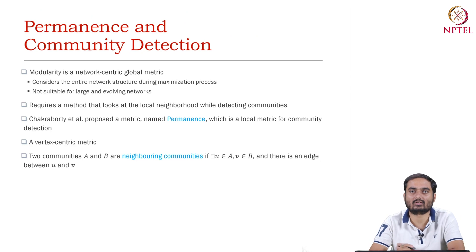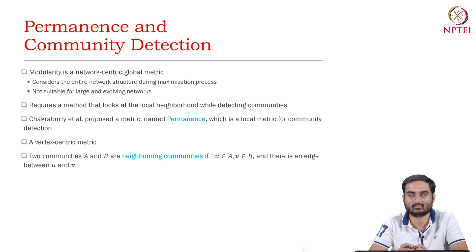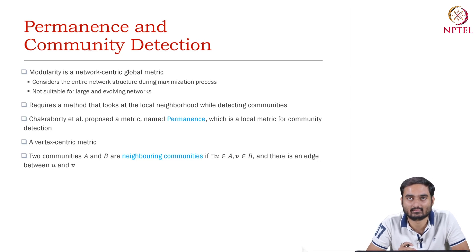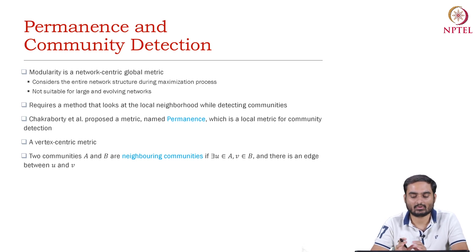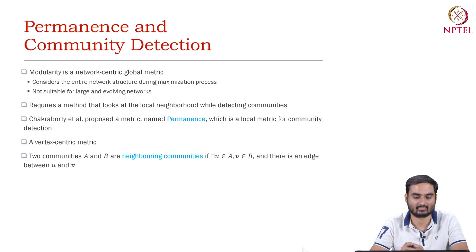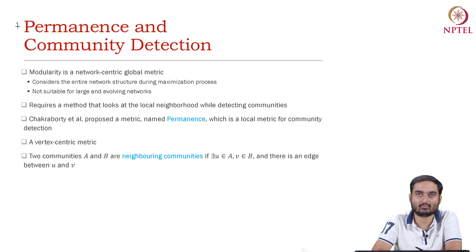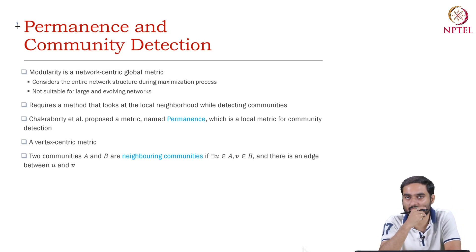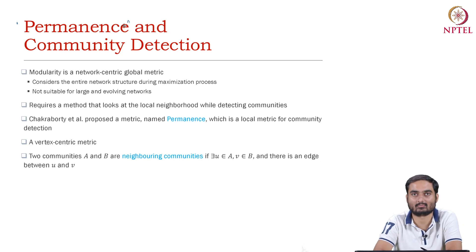The problem of modularity maximization is basically threefold, as we have already discussed. The first one is resolution limit, the second one is the degeneracy of solution, and the third one is asymptotic growth of the modularity value. In order to deal with these problems along with some others, people started defining other kinds of metrics. We also defined, back in 2014, a metric called permanence.